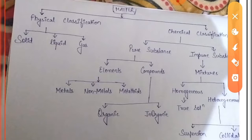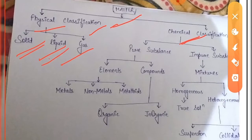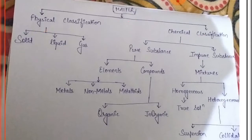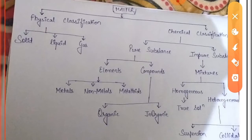Matter is basically classified into two parts: physical classification and chemical classification. Physically, matter is classified into three parts which are solid, liquid and gas. Solids are substances whose particles have higher force of interaction, liquids have less force of attraction, whereas gases have very low force of attraction.